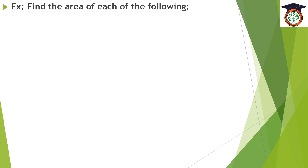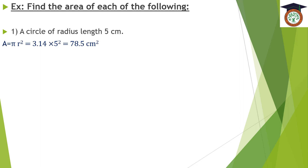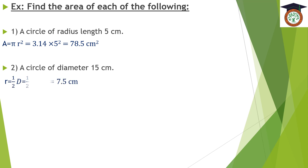The question says: find the area of each of the following. The first one: a circle of radius length 5 centimeters. As we know, area equals π times R squared, so it equals 3.14 times 5 squared, which equals 78.5 centimeters squared.